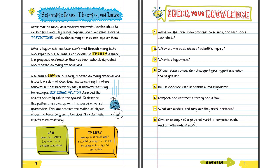A scientific law, like a theory, is based on many observations. A law is a rule that describes how something in nature behaves, but not necessarily why it behaves that way. For example, Sir Isaac Newton observed that objects naturally fall to the ground. To describe this pattern, he came up with the law of universal gravitation. This law predicts the motion of objects under the force of gravity, but doesn't explain why objects move that way. Describe what happens under certain conditions is a law. And a theory is an explanation of why something happens, based on years of testing and observation.